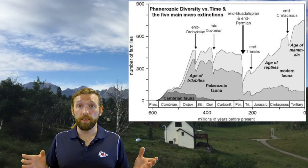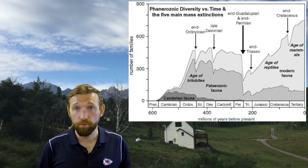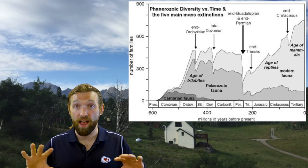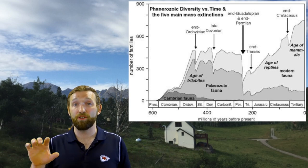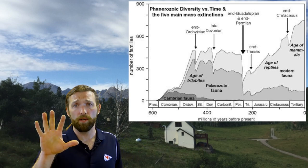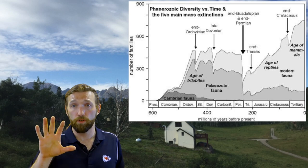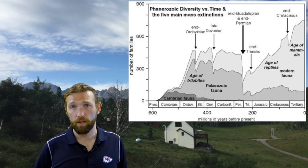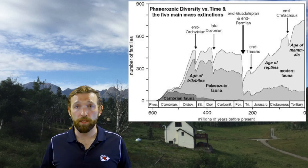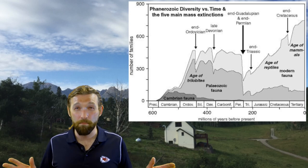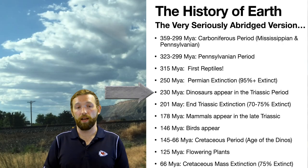The good news is that the 5% of things that were left — those 5% are our ancestors. Everything living today can trace its origins back to those tough 5% that were able to eke it out during the most deadly time period in Earth's history. Right after that, life basically immediately recovers — about a million years later life is back to where it was — and now we've reached the time of the dinosaurs.